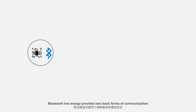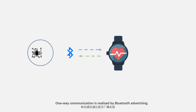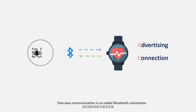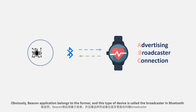Bluetooth Low Energy provides two basic forms of communication: one-way communication and two-way communication. One-way communication is realized by Bluetooth advertising, while two-way communication is the so-called Bluetooth connection. Obviously, beacon applications belong to the former, and this type of device is called a Broadcaster in Bluetooth.